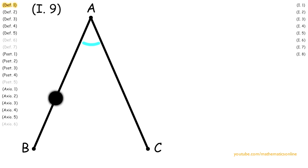First, we create point D on line AB, and we use Proposition 3 to make line AD congruent to line AE.